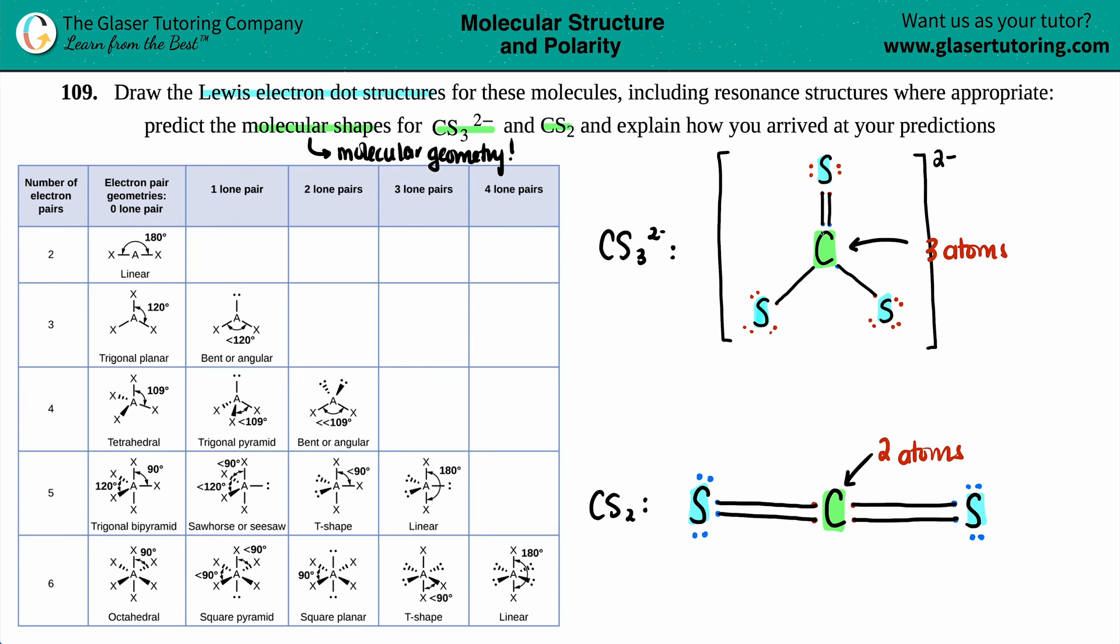And then we have to make sure if this central atom has any lone pairs. So do you see any dots around the carbon? I don't see any, right? There were all bonds. Once again, we don't care about any of these dots, because it's not the center atom. So in this case, we have zero lone pairs. And the same thing for this carbon, right? I didn't see any dots. So we have zero lone pairs.